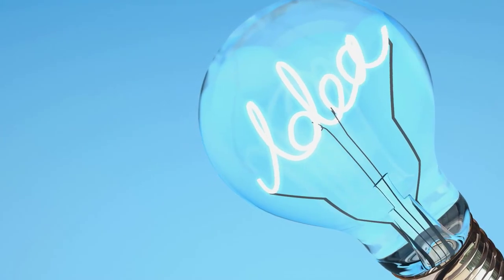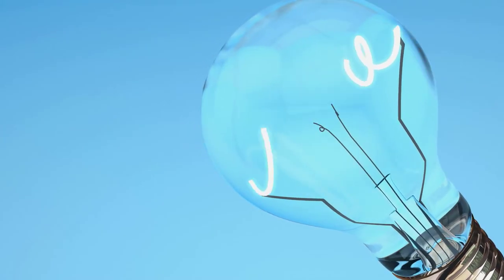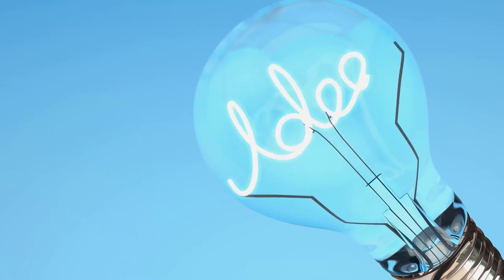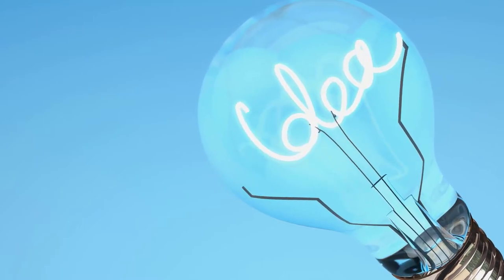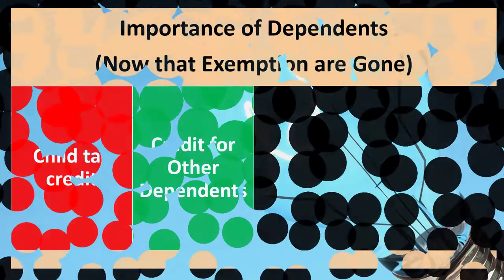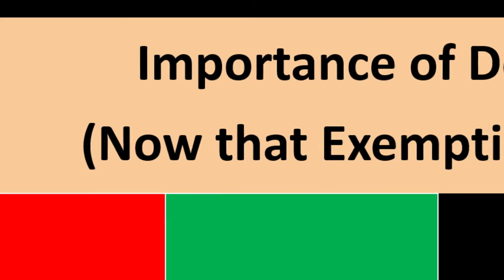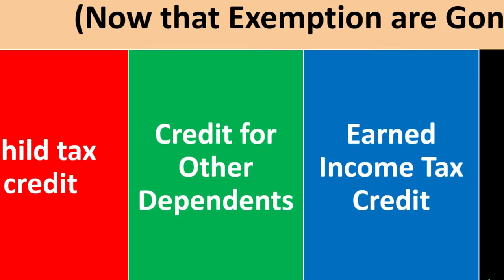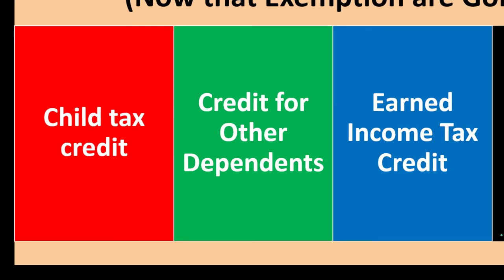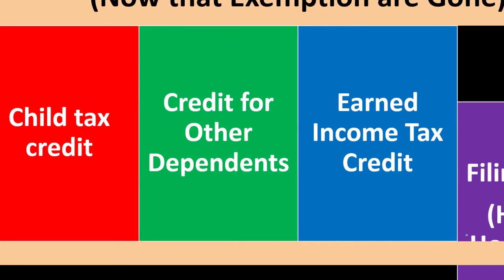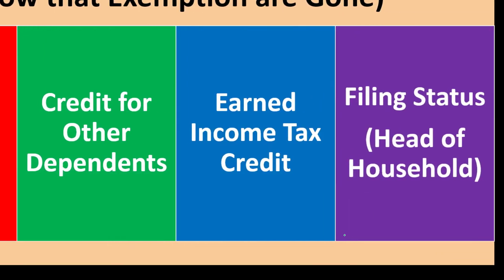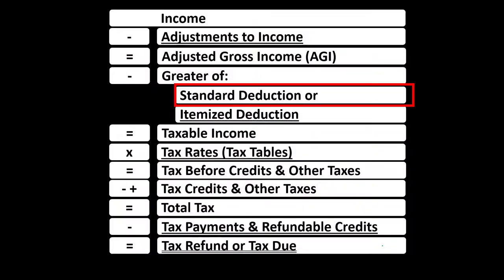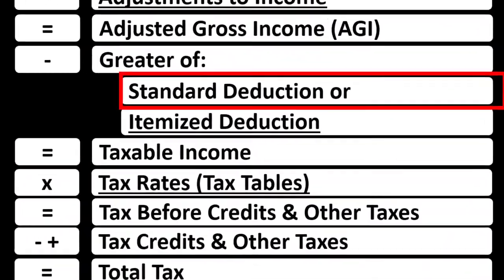You're thinking: is someone a dependent? First, do they qualify as a qualifying child? If yes, that's the most benefit you're going to get typically. If not, then default: do they qualify for other dependent credits? They could also affect your earned income tax credit if that's applicable for you.